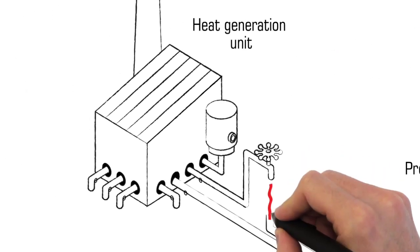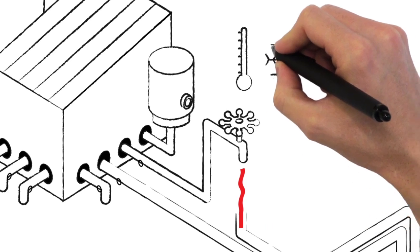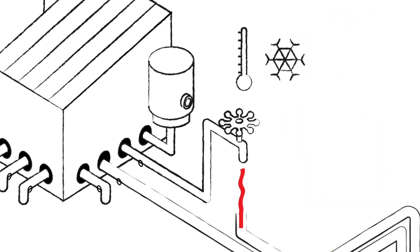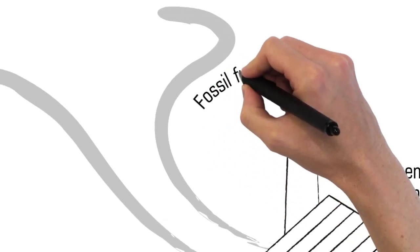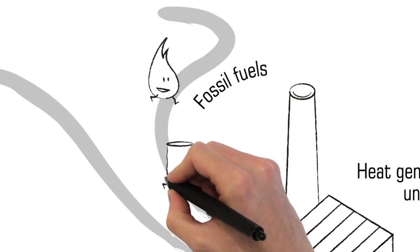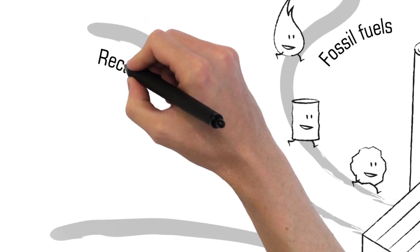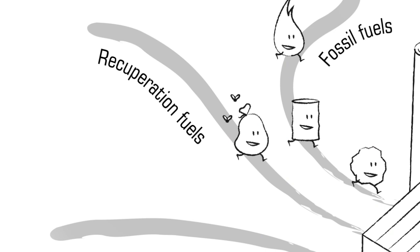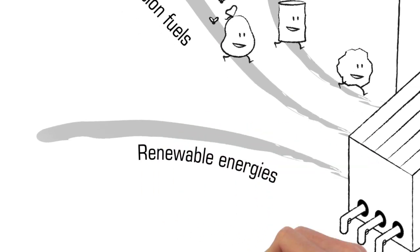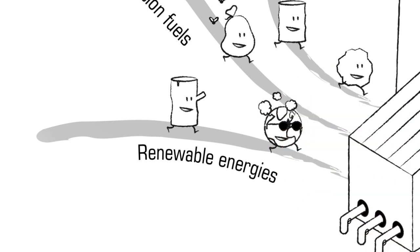The boiler heats water. It is also capable of supplying cold water for air conditioning. This boiler room can be powered by fossil fuels such as gas, oil or coal; recuperation fuels produced by incinerating household garbage, for example; or renewable energies such as wood in the case of biomass boilers, or heat from the earth in the case of geothermal energy.